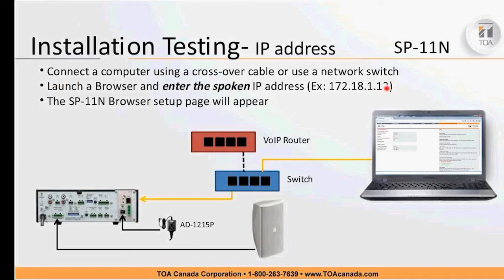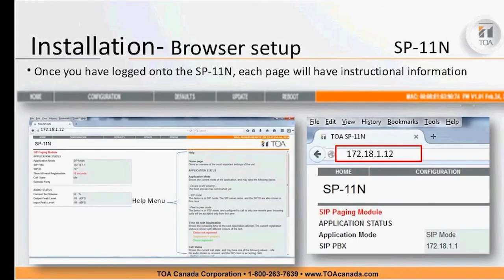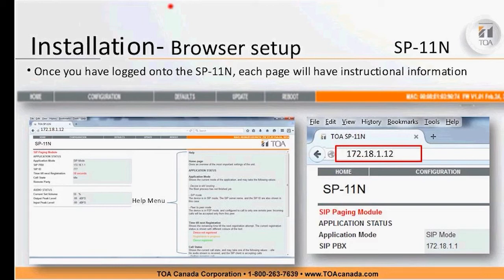The browser page will appear with several tabs: Home, Configuration, Defaults, Update, and Reboot. You can type the IP address straight into the browser address bar and log on to the SIP module. The home page is your information page. Each tab has a menu on the left explaining all the adjustments and features — this is essentially the manual for the unit itself.